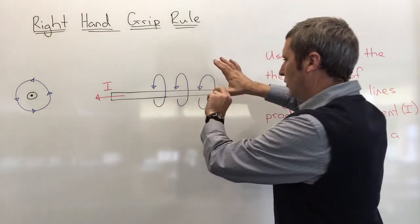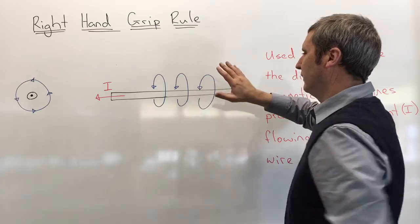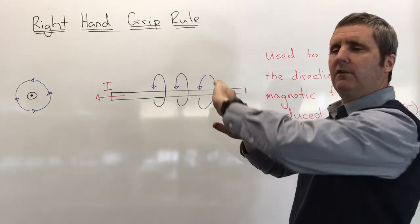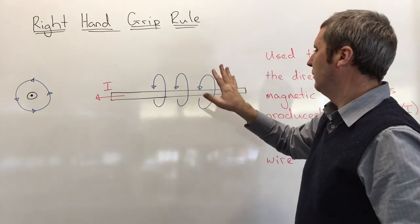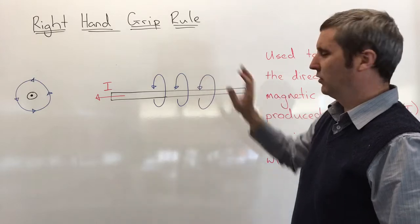My thumb shows the direction that the current is traveling and my fingers represent the direction of the magnetic field.